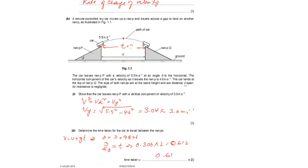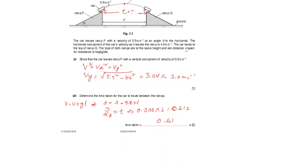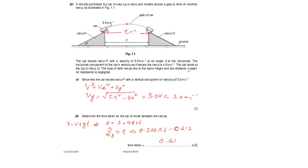So the next part is determine the time taken for the car to travel between the ramps. First of all, what we assume, first we calculate the time to reach to the maximum height. And the time going landing to the ramp will be the same as time to reach to the maximum height.